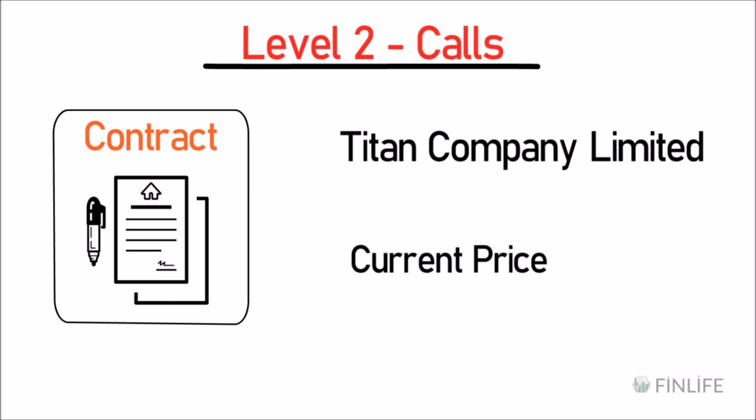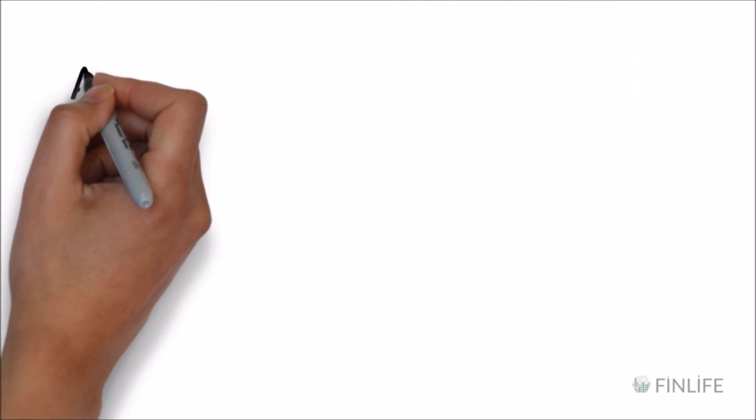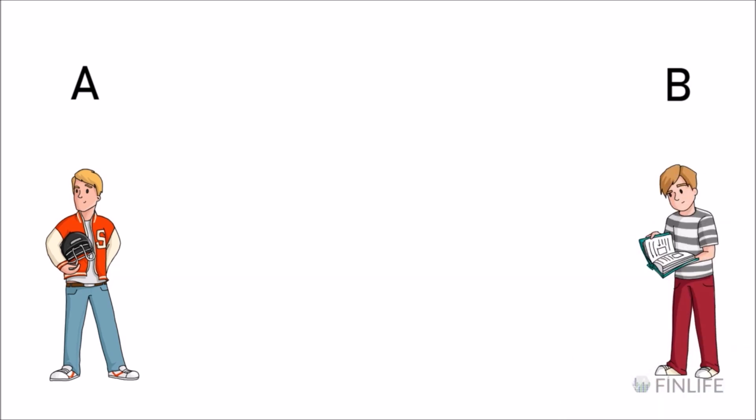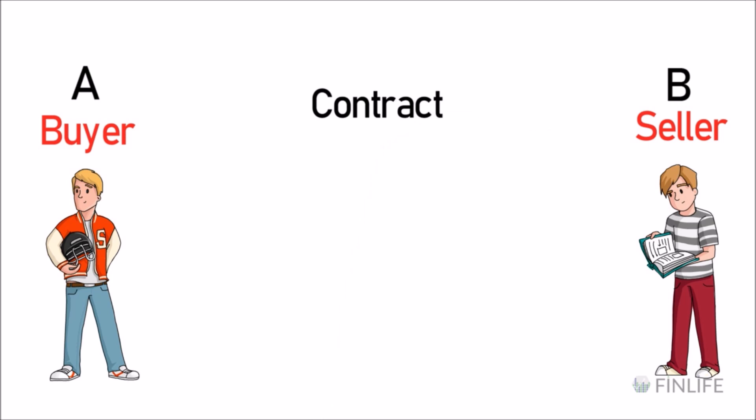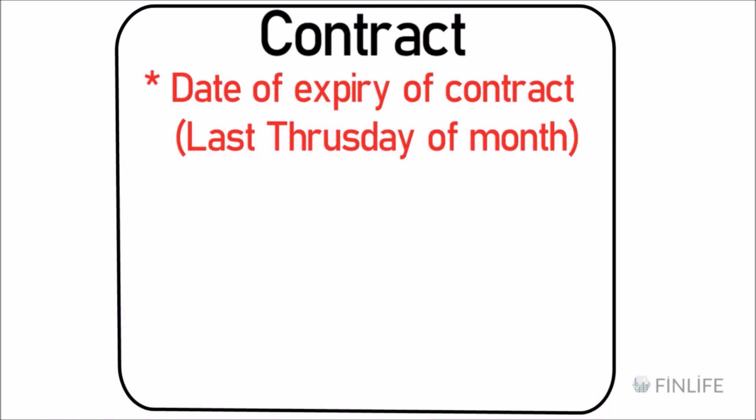Let's take an example of Titan trading at 1,000 rupees current market price. In a call contract, there are two people A and B. If A is buying a call option and B is selling one, they mutually agree and it is written on a contract. The contract mentions the expiry date — usually the last Thursday of the month — so if today is 1 August, the contract expires on 29 August.